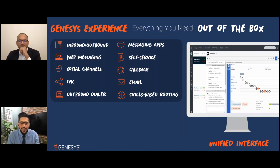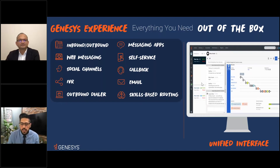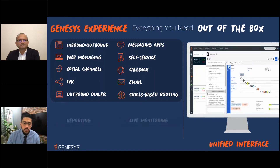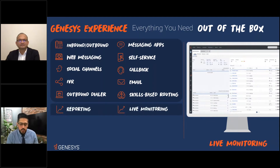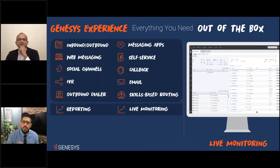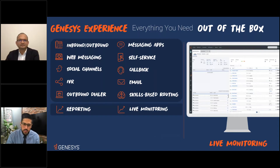You don't have to onboard four or five different agents to handle four or five different channels. The agent has a 360-degree view of the customer's engagement with the organization. The agent logs into one screen and manages all different types of interactions through the omnichannel. Supervisors have access to live dashboards, live monitoring, and historical information — a complete set covering both the contact center side and attributes from customer engagements.